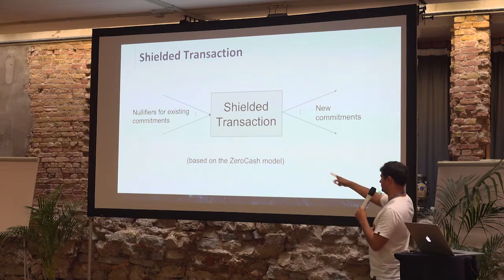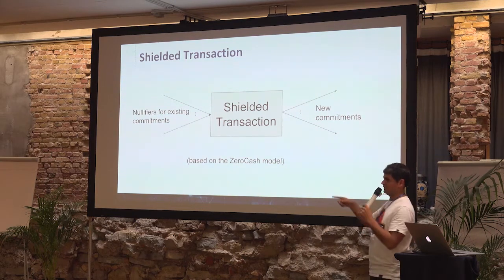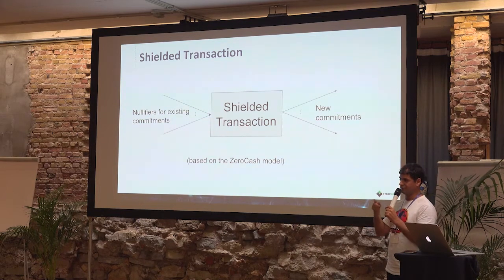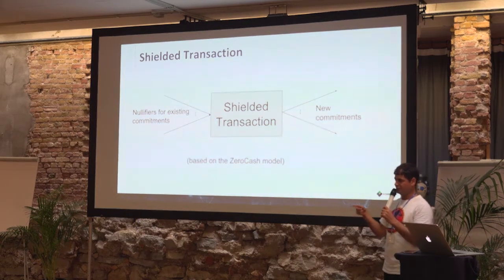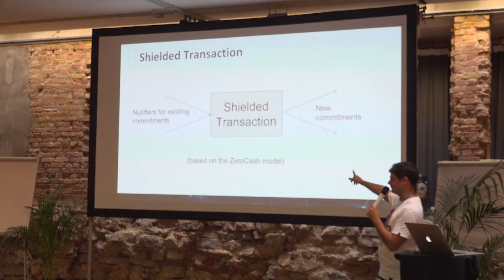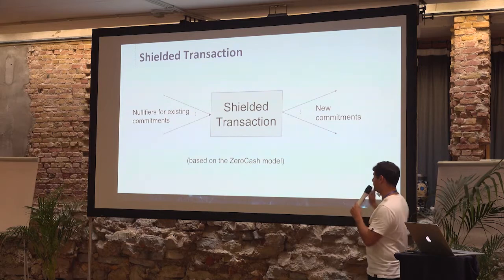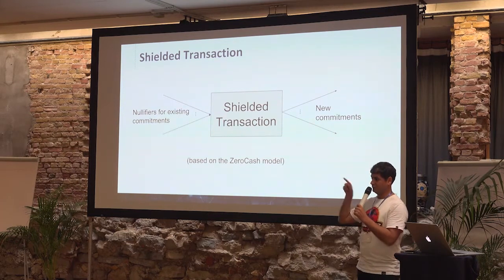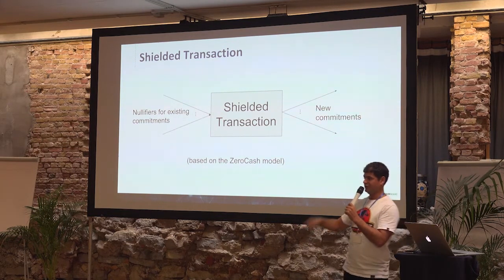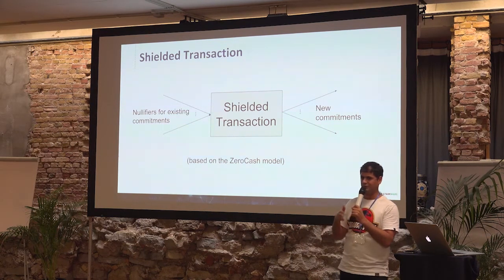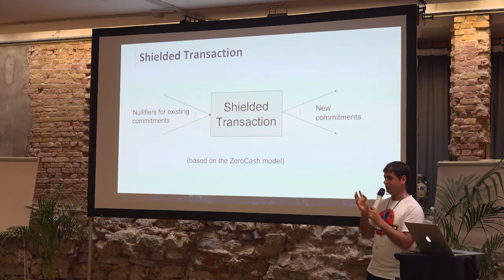What's not in this picture is that if Alice wants to give value from Alice to Bob via a shielded transaction, Alice needs to send the transaction on-chain but she also needs to tell Bob: hey Bob, you have a new commitment with your public key on it and this value. There are ways to do it on-chain and ways to do it off-chain.